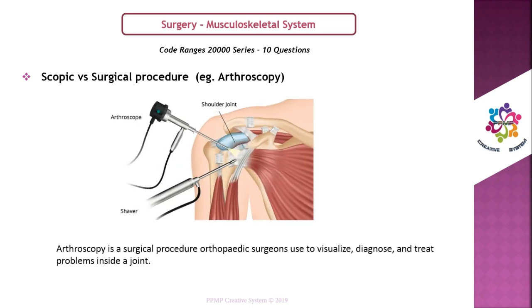Scopic versus surgical procedure — example: arthroscopy. Arthroscopy is a surgical procedure orthopedic surgeons use to visualize, diagnose, and treat problems inside a joint. You will get some tricky questions in this area, so be careful. Scenario one: the provider performs a procedure by open incision or by using a scope — code accordingly. The alternative name to identify a scopic procedure is trochar, video-assisting device, or camera. Scenario two: the physician initiates a scopic procedure but for some reason discontinues it and proceeds to a surgical procedure — in that case, report only the surgical procedure; do not report the scopic procedure.